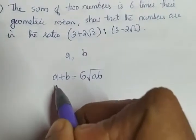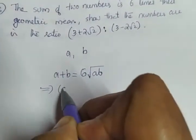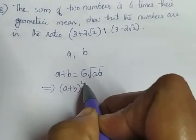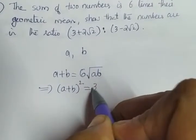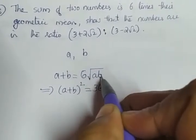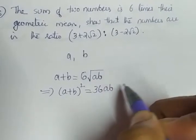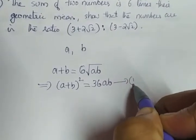What we will do here is just square this equation. What we will get: A plus B the whole square is equal to 6 squared which is 36, and root of AB the whole square is AB itself. Let this be equation number 1.